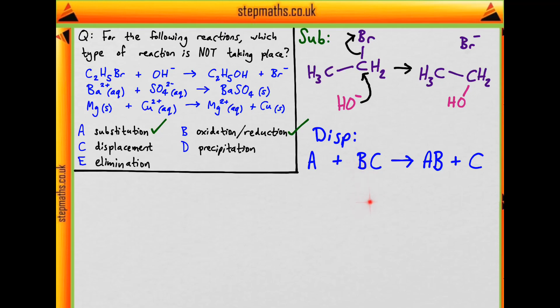Well, this may look familiar because in the first reaction, we saw that A was the hydroxide and BC was this bromoethane. And we're forming AB, which is this alcohol, and C is the bromide. So the hydroxide has displaced the bromine. So this is not only a substitution, it's also a displacement.